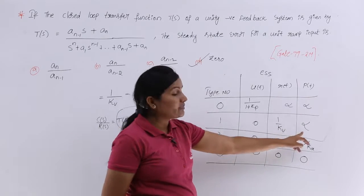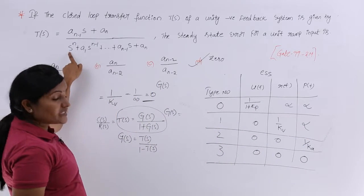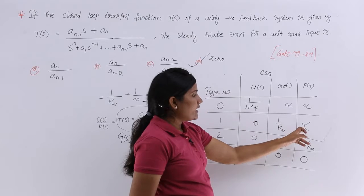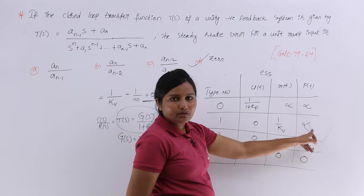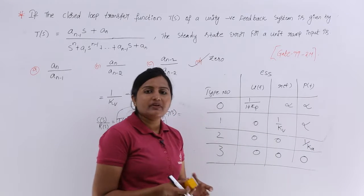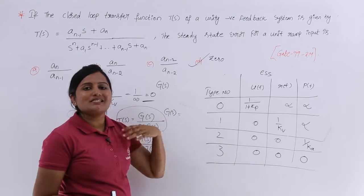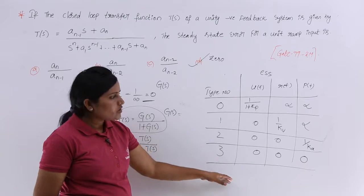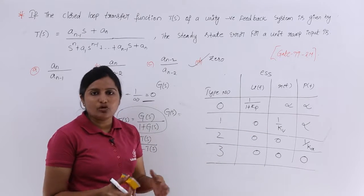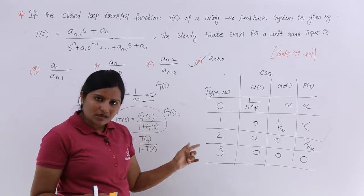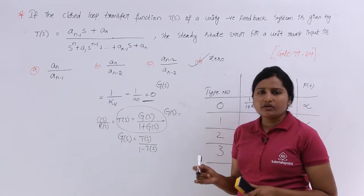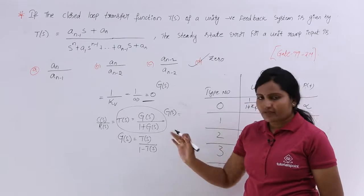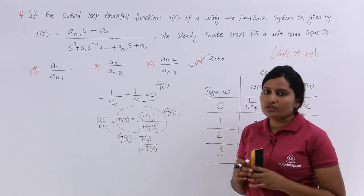For example, for a type 1 system with parabola input, ESS = infinity. But here the type number is N — greater than 3 — so you get all zeros. The steady state error is 0 for any input. According to the table, the answer is ESS = 0. For conventional exams use the full procedure; for quick solutions, use this simple table to get the answer in one minute.